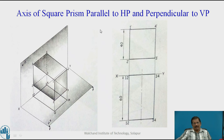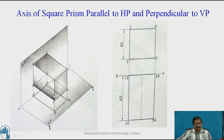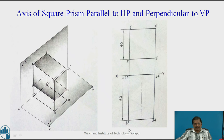Up till now we have studied when the solid is in HP. Now here the solid is in VP because the axis is perpendicular to VP and parallel to HP. If you observe this square prism, the axis is parallel to HP and perpendicular to VP. Its front view will be a square equal to the base or top surface, and the top view will be a rectangle of base length and axis length. While drawing, first draw in the front view as 1, 2, 3, 4 as a square — two sides parallel to HP and two sides perpendicular to HP. Project it downwards to get 1', 2', 3', 4'. Draw with axis length 60 mm; you will get the top view as a rectangle of 60 by 40, and the front view as a square of 40 mm by 40 mm.